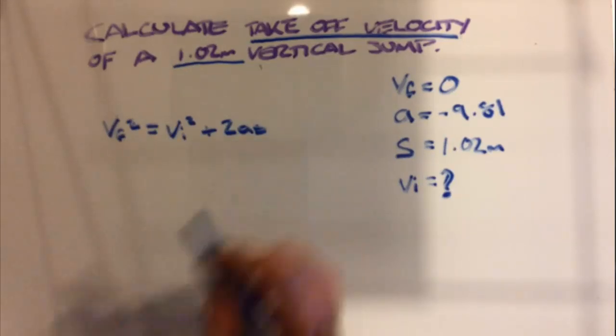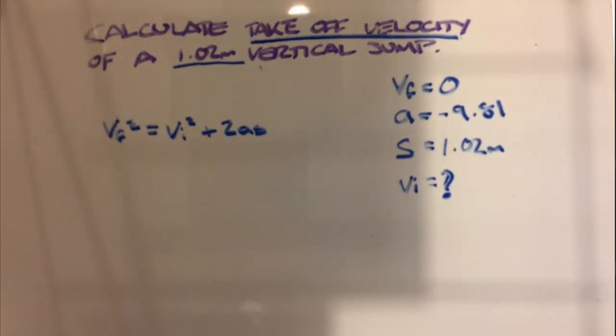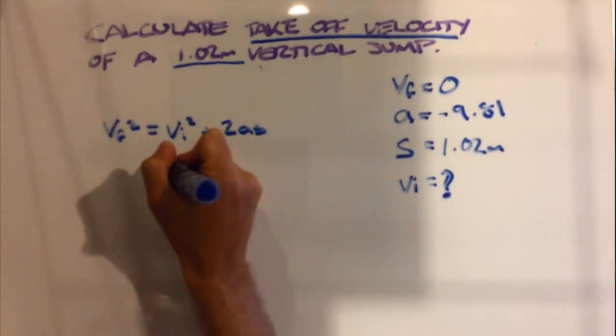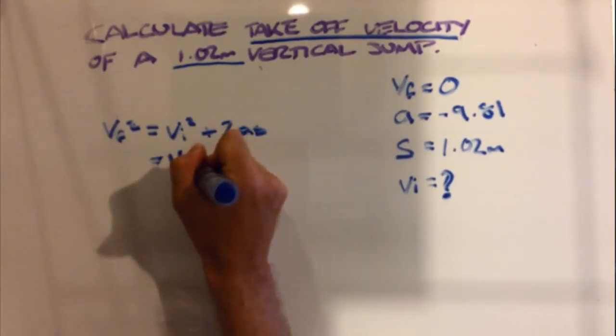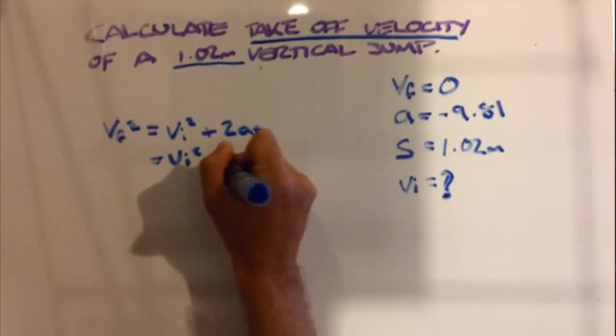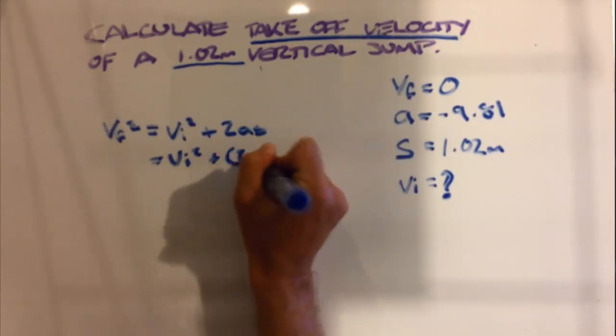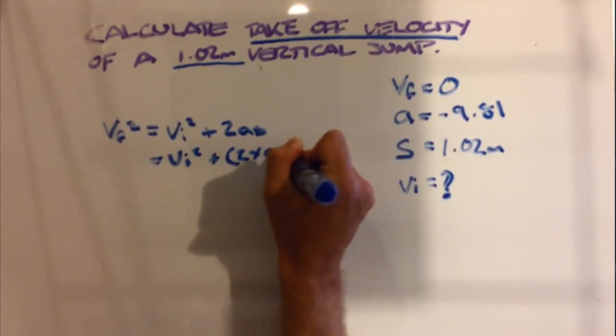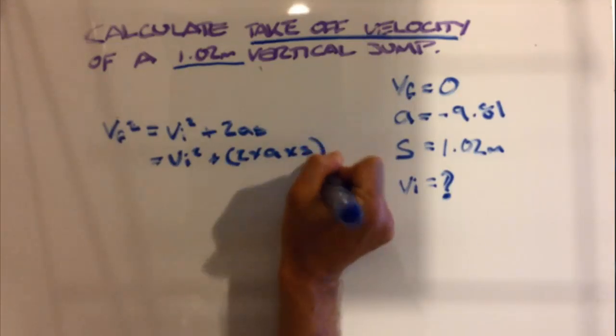So when we see a formula like that, it means 2 times acceleration times displacement. We can write that out: vi² + 2 times our acceleration times our displacement.